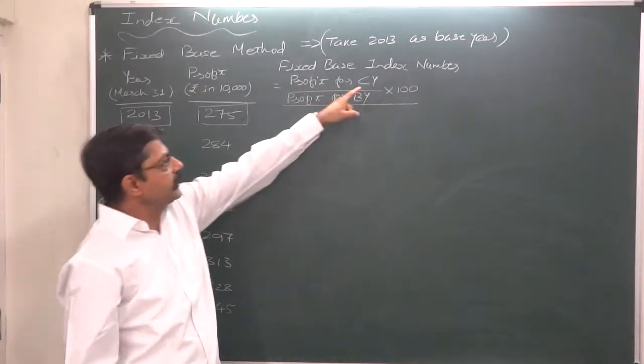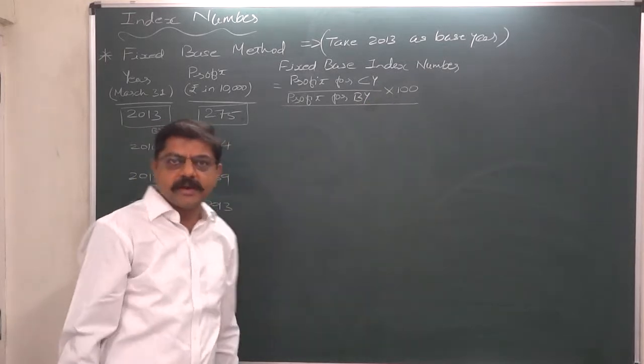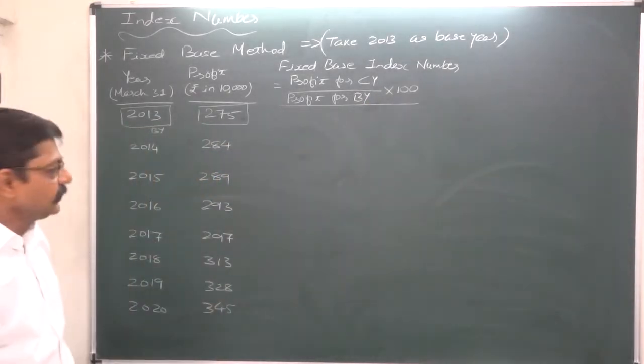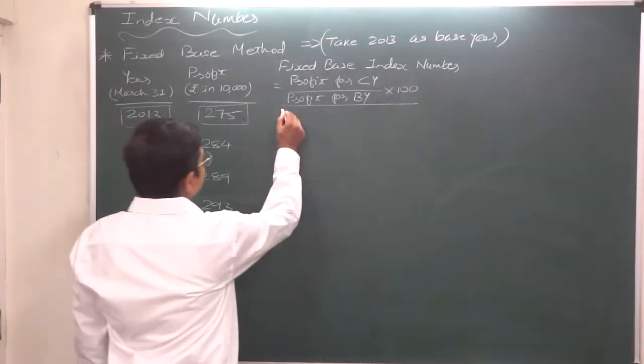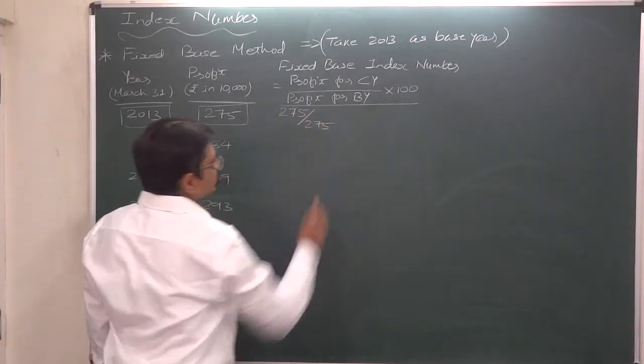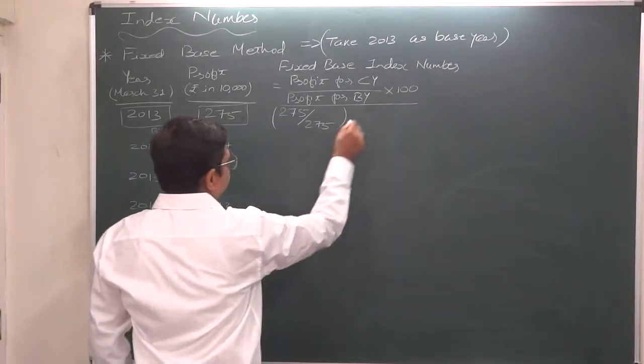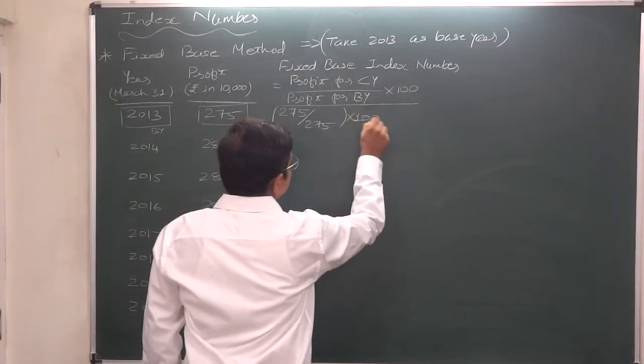Now we know that the formula to calculate index number for profit is profit for current year divided by profit for base year, all into 100 to get the percentage. Let's calculate for the year 2013. The value or profit for current year is 275, and profit for the base year is also 275, so the ratio comes to 1. It always happens with the base year - index number for base year is always 100.